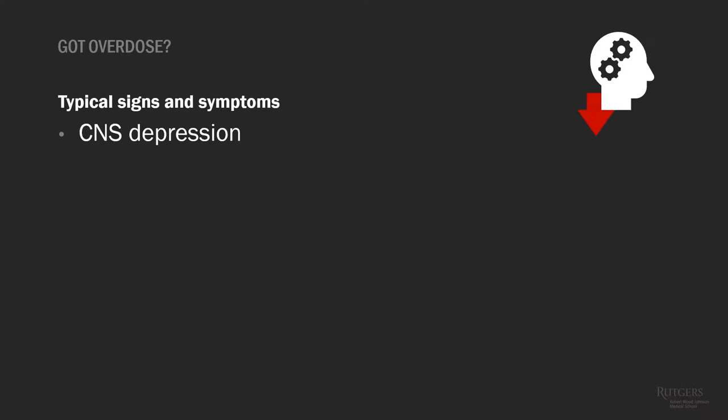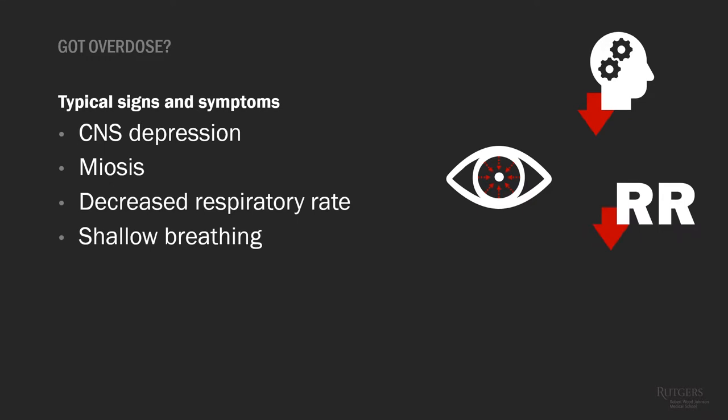If a patient presents with a possible opioid overdose, typical signs and symptoms would be CNS depression — patients will be difficult to arouse, very lethargic, won't be talking much. They'll have pinpoint pupils or miosis. The hallmark for opioid toxicity is decreased respiratory rate with shallow breathing, resulting in a lower pulse ox. Respiratory depression has very significant clinical impact, whereas CNS depression and miosis can be managed in a less emergent manner.